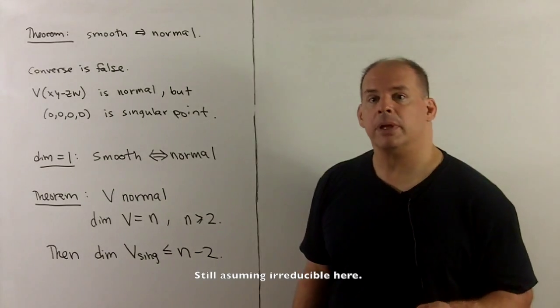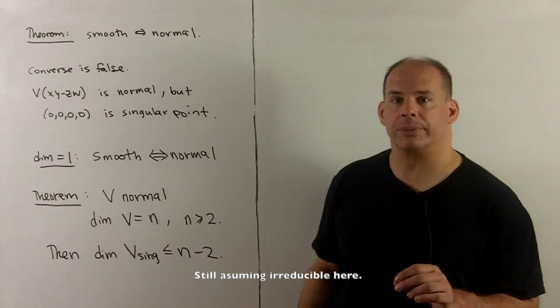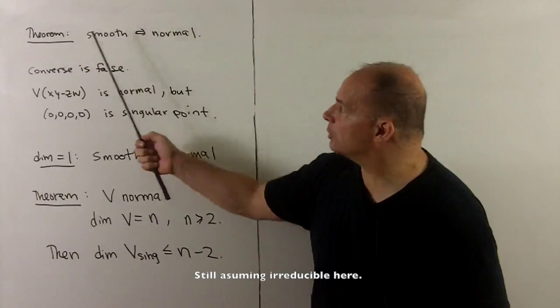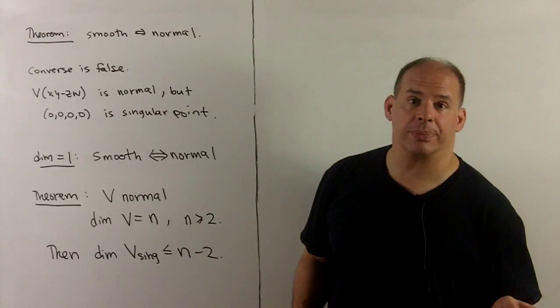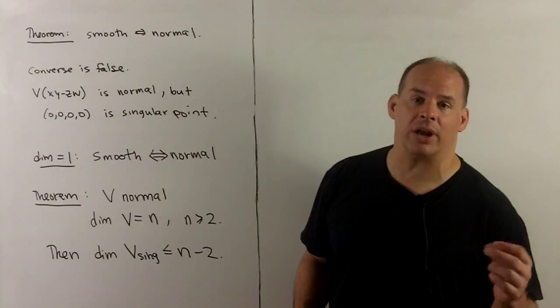To finish, we note some facts without proofs. First, we have a theorem stating that smooth implies normal. Here, the converse is false. There are going to be normal varieties that are not smooth.